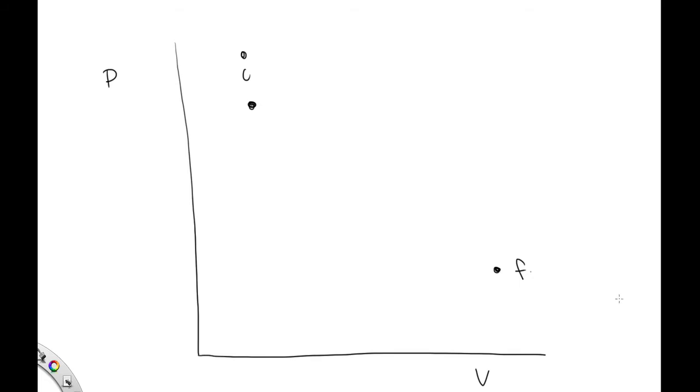Path one consists of an isothermal expansion, an adiabatic expansion, and then another isothermal expansion. Probably not the best drawing. This one's isothermal.